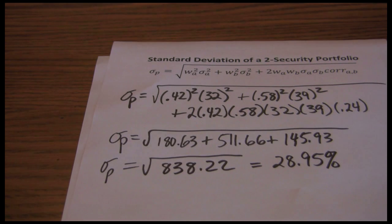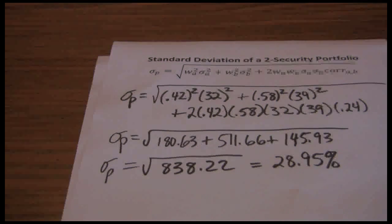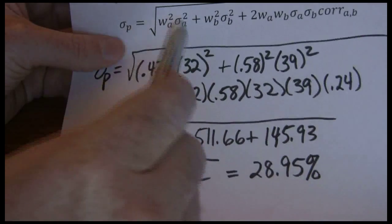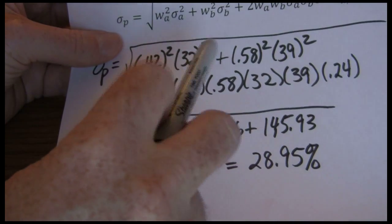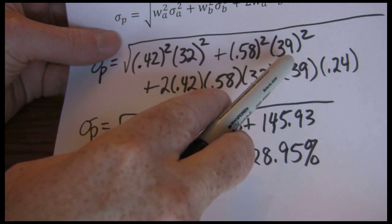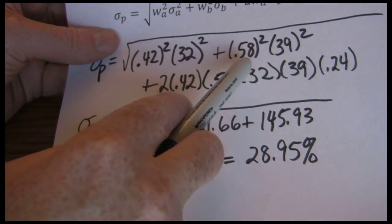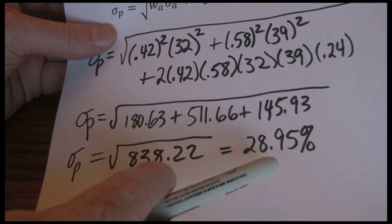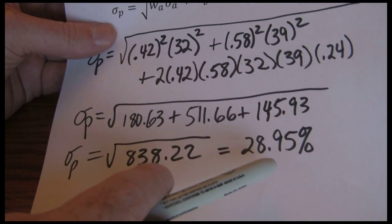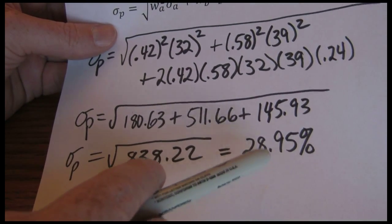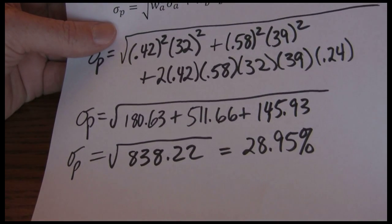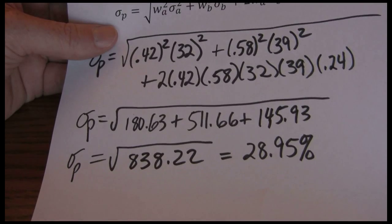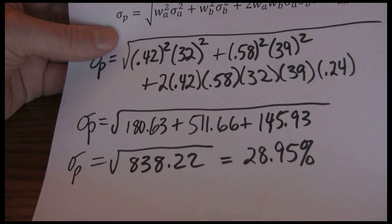Now when I wrap this up I just want to come back and point out something about the idea of diversification. Here we have two securities. One has a 32% standard deviation. One has a 39% standard deviation. I'm actually putting more of my money into the riskier stock. And what happens to my overall risk? It's actually less than either one of the two stocks. Now it won't always result in a standard deviation less than all the stocks in our portfolio, but often times that does happen because of diversification.